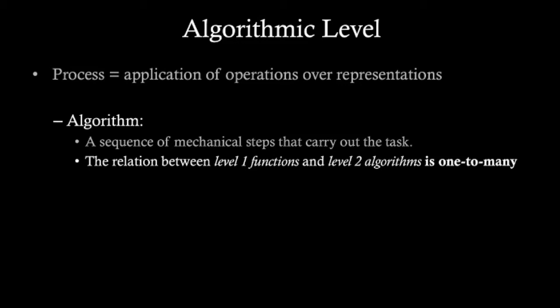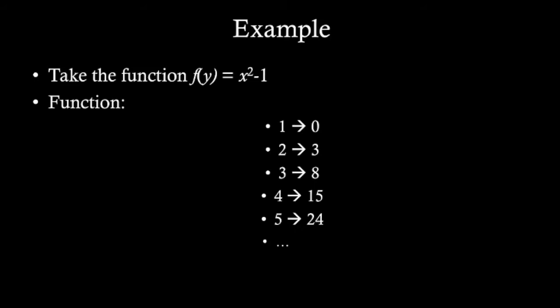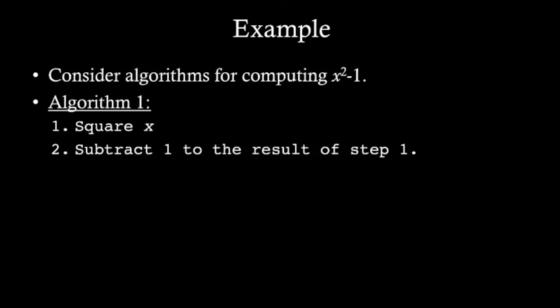Take this function: y is x squared minus 1. To 1, there corresponds 0; 2 is mapped to 3; 3 is mapped to 8. There can be more than one algorithm for computing this function. One algorithm can be: square x, then subtract 1 from the result.